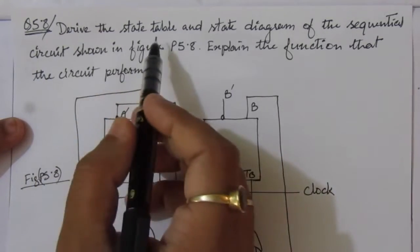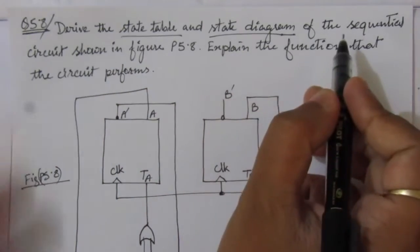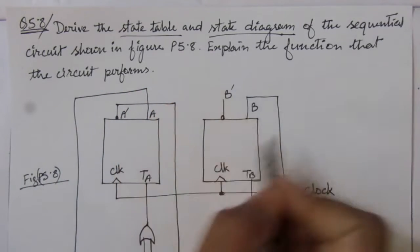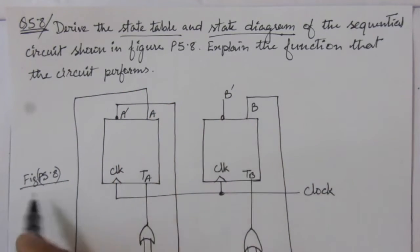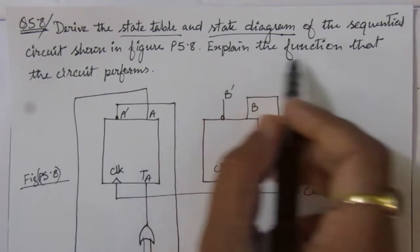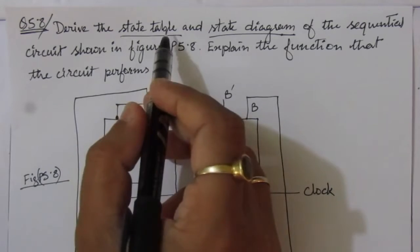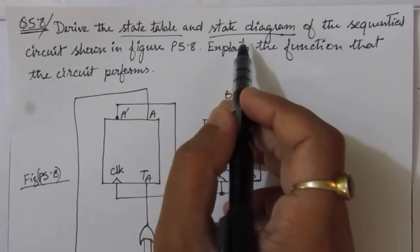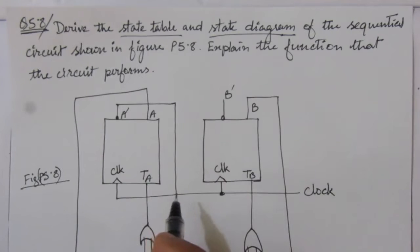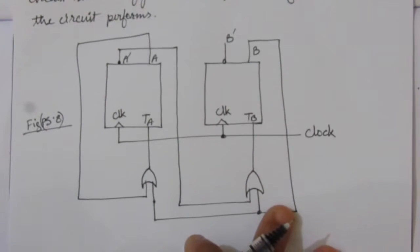The problem is to derive the state table and state diagram. That means we have to find out the state table and state diagram of the sequential circuit shown in figure P5.8. Then we have to explain the function that the circuit performs. First, we find the state table, then the state diagram, and finally explain what function this circuit is performing.